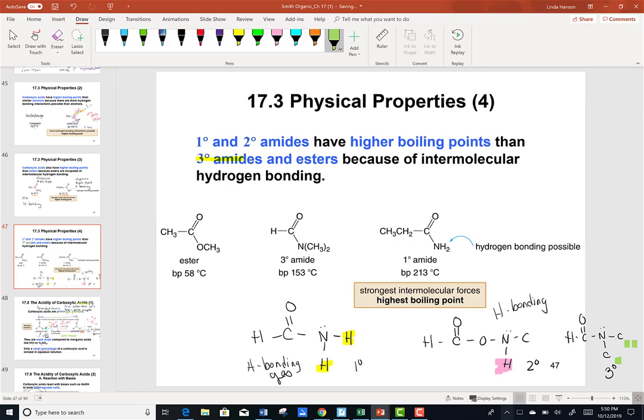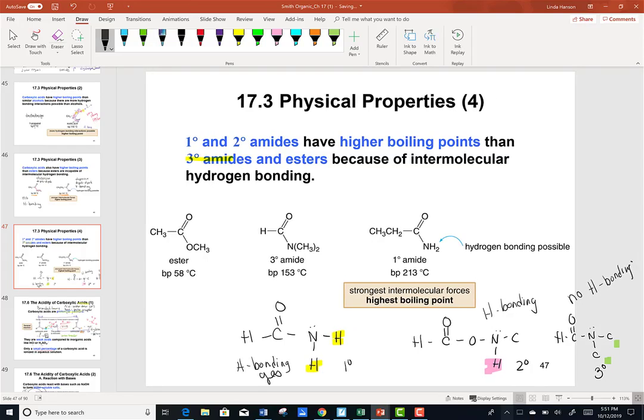But notice now on our tertiary amine, there are no hydrogens present. So this is not able to undergo hydrogen bonding. And therefore, tertiary amides and esters, because of their intermolecular forces lacking hydrogen bonds, will have lower boiling points than those molecules that do indeed exhibit hydrogen bonds.